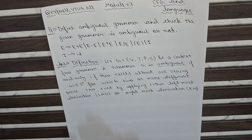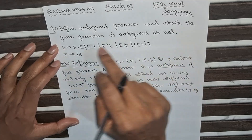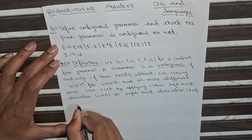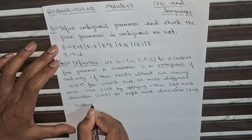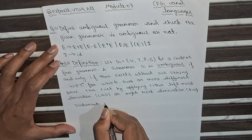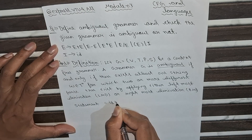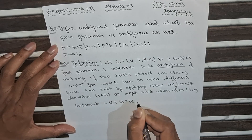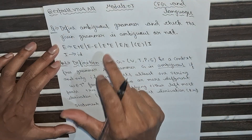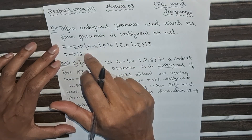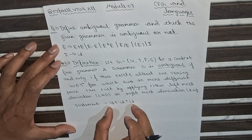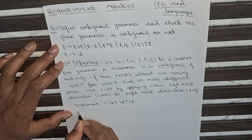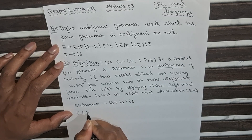For better understanding, we will check if this grammar is ambiguous or not. We take the statement: ID + ID * ID. We will take two different productions from this grammar and prove this statement. First, we take E → E + E and use LMD.